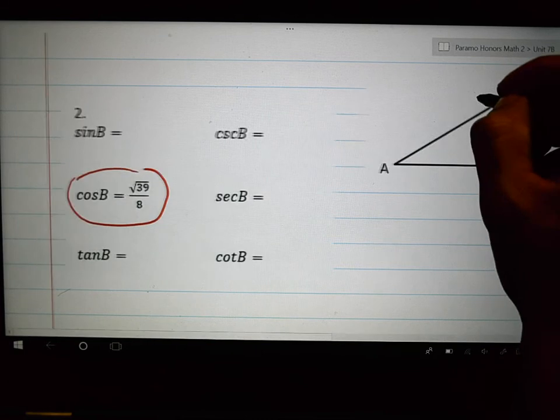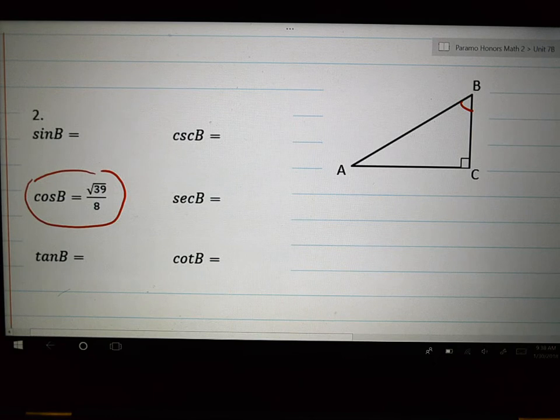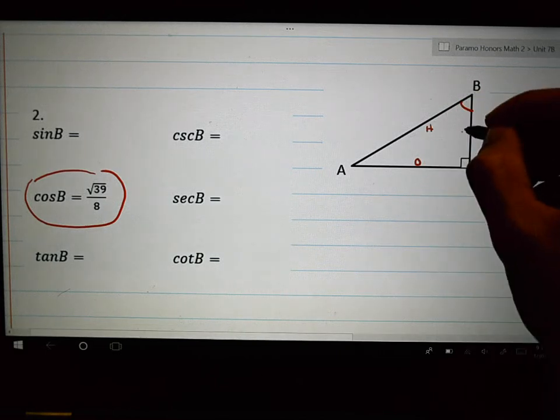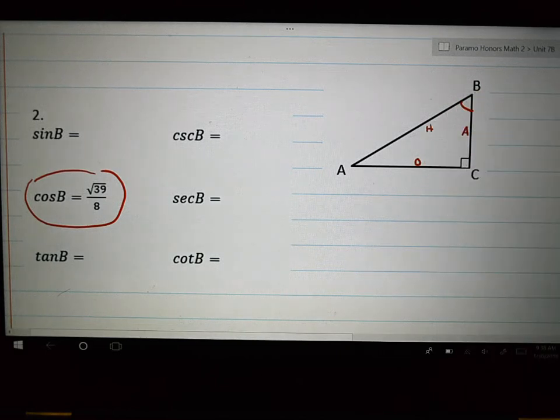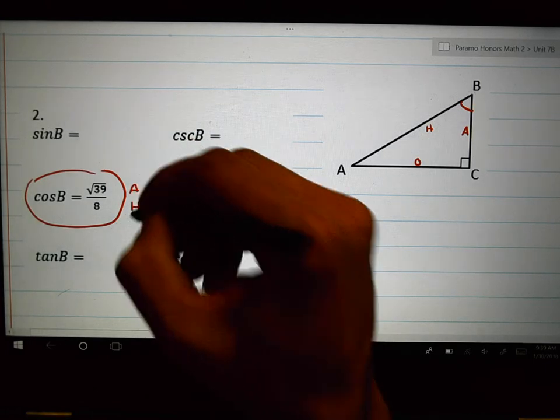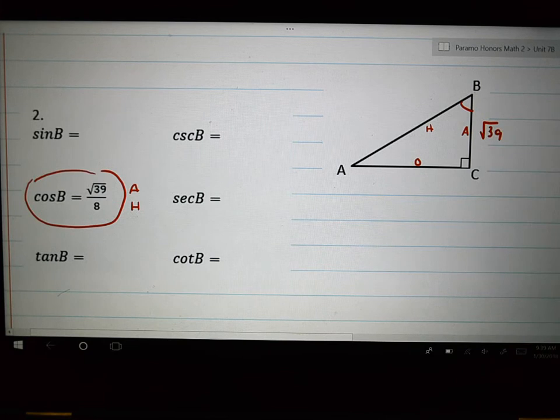So let's put that in our picture. Here's angle B. Let me draw. There we go. Here's angle B. If you are still struggling, I would recommend labeling O, H and A. Oh. Ha. Ha. There we go. It comes back. It's a common thread. Cosine. Ca. A over H. I know that the A is root 39 on this side. I know that the H is 8.